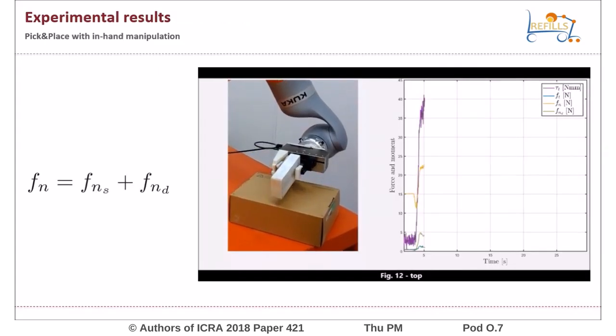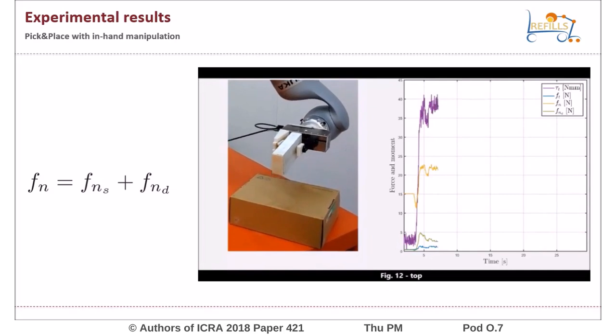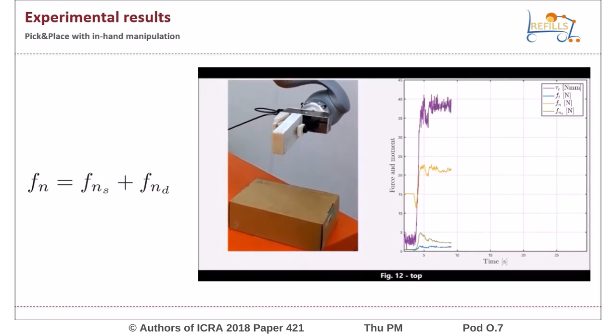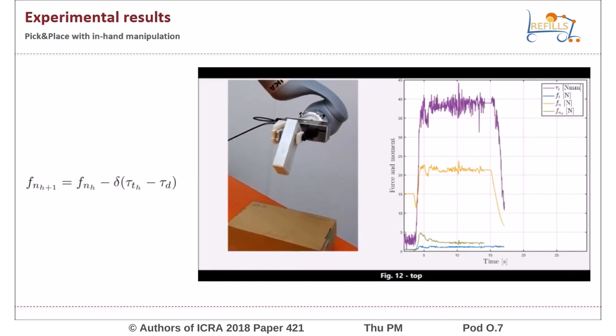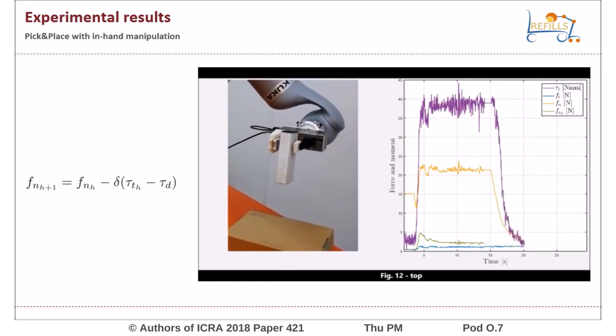Here we can see a complete video of an in-hand manipulation task. The robot picks an object without knowing its weight nor its center of gravity. Afterwards, in order to reorient the object in hand, it performs a pivoting task by decreasing grip force until the measured torsional moment reaches the desired value.